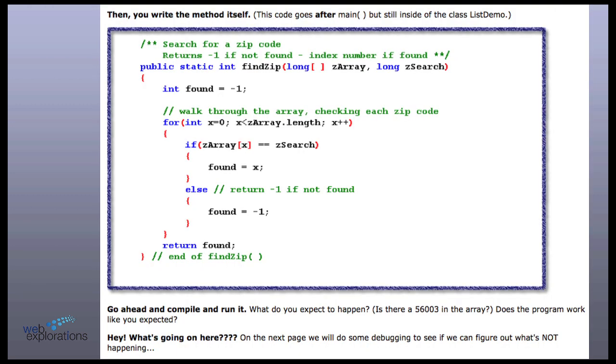All right. So let's do our search method. So here's our find zip. We're passing in an array of longs and we're passing in a long zip code. I start out by saying minus 1. Oh, notice my comments. Return minus 1 if not found. Returns the index number if it is found. So that's what's going to work with my ternary. So I start out assuming we're not going to find it. We say found is minus 1. And then I walk through the array and I say if there's a match here. Notice the equal equal.